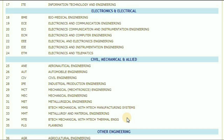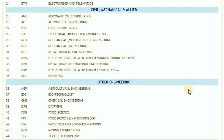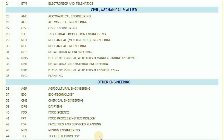MTE — BTech mechanical with MTech thermal engineering. TLG — planning. Coming to other engineering courses: AGR — agriculture engineering. BIO — biotechnology. CHE — chemical engineering. DRG — dairying. FDS — food science. FPT — food processing technology. FSP — facilities and services planning. MIN — mining engineering. TEX — textile technology.